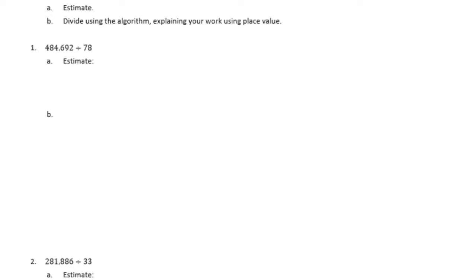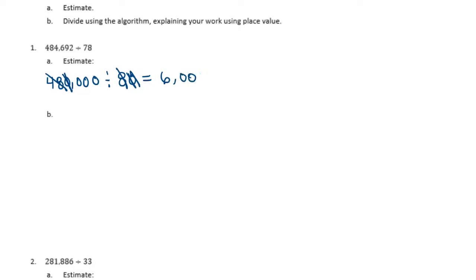Exercises 1 through 5. For each exercise, estimate and divide using the algorithm. Explain your work using place value. So let's first estimate: 484,692 divided by 78. I'm going to make this 480,000 divided by 80, because I can do 48 divided by 8. 48 divided by 8 is 6. I'm going to cancel out the zeros and I have 3 left. So my estimate is 6,000.